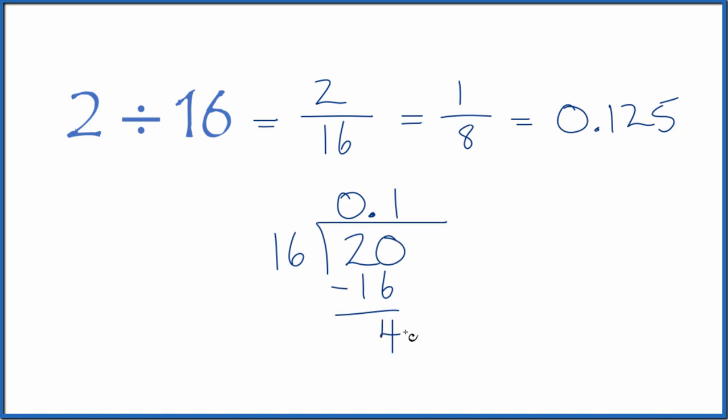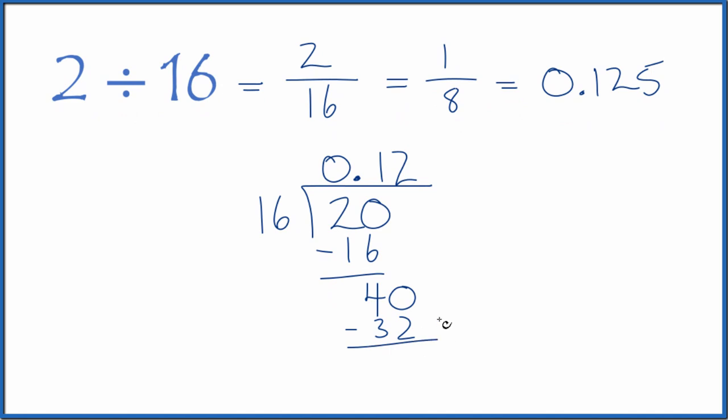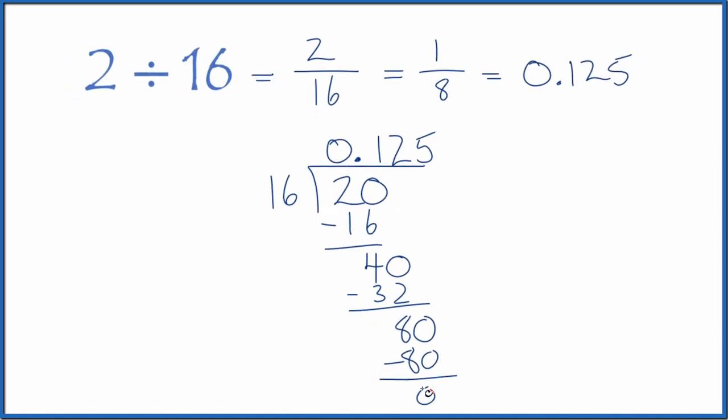16 doesn't go into 4. Call it 40 and move over 1 here. 2 times 16 is 32. We subtract and get 8. Let's call that 80. And 5 times 16 equals 80. We subtract, no remainder.